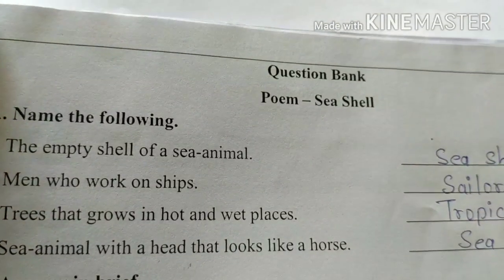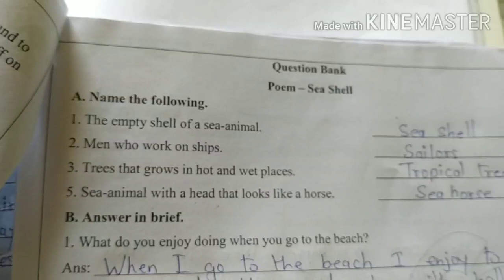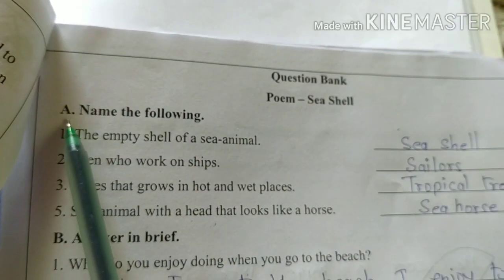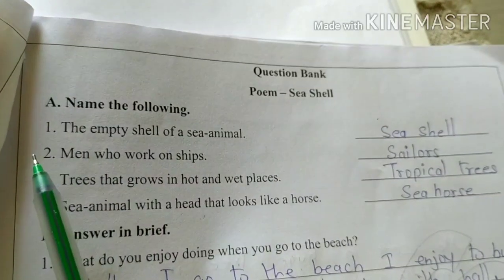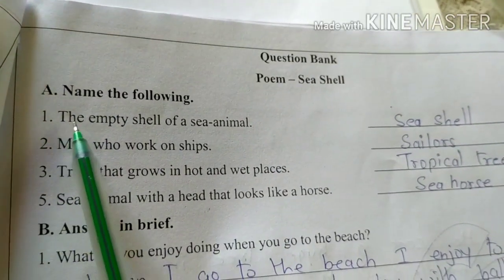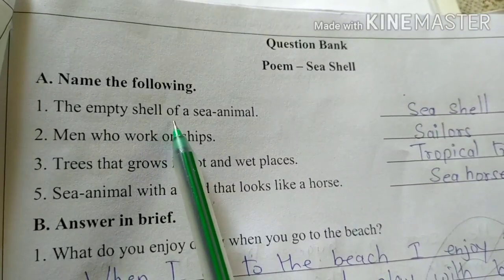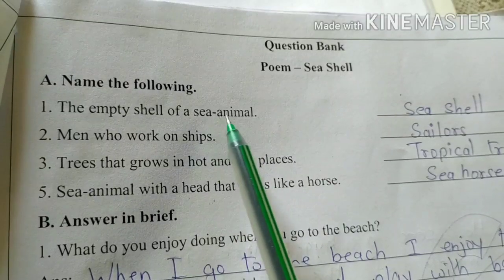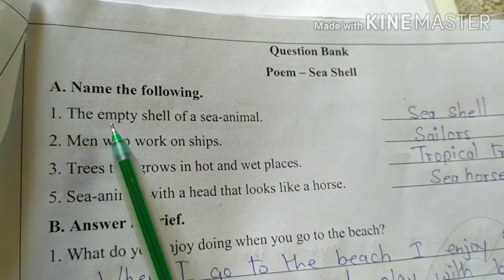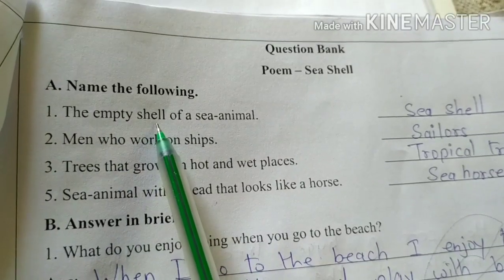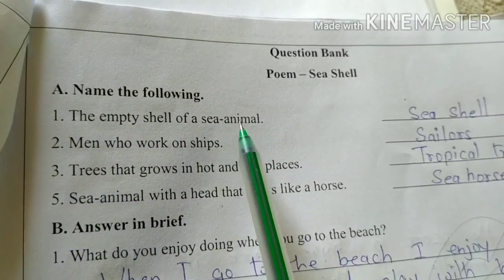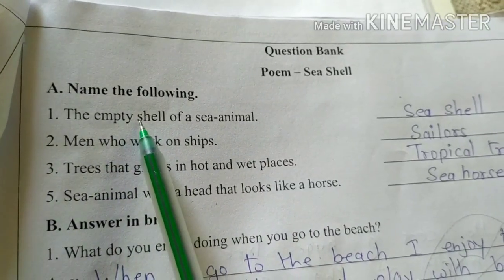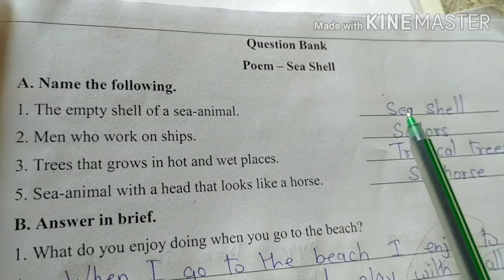Now look at page number 5 — question bank of the poem Seashell. Look at question number A: name the following. Question number 1: the empty shell of a sea animal. Sea animal यानि समुद्री जानवर, empty means खाली, shell means कवच — समुद्र में रहने वाले जानवर के खाली कवच को क्या कहते हैं? The answer is: Seashell.